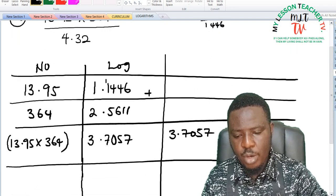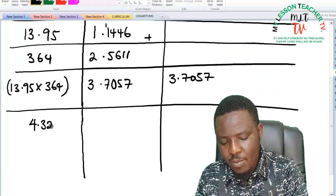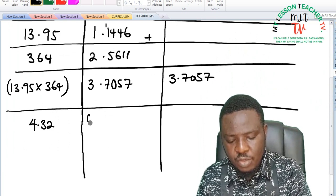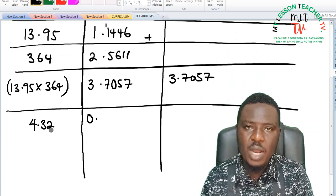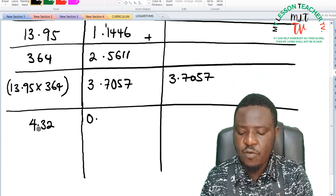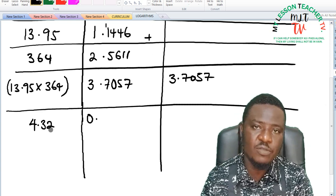To the numerator we have 4.32. So 4.32 in number is going to give us 0 point. I will then look for 43 under 2. Why am I having 0? Because expressing 4.32 in standard form is said to be 4.32 times 10 raised to the power of 0.